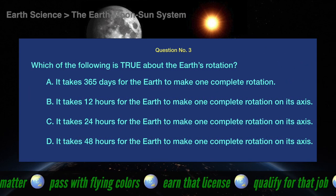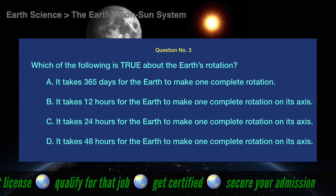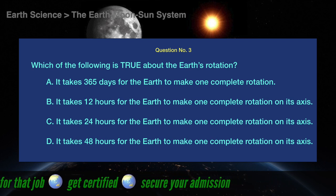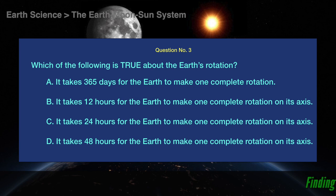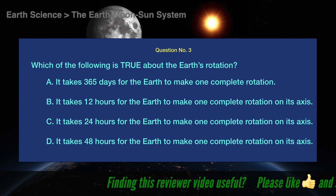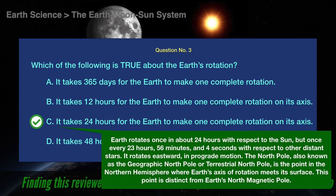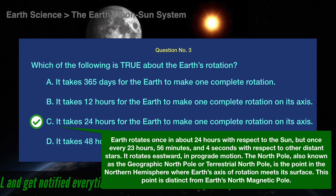Question number 3. Which of the following is true about the earth's rotation? A. It takes 365 days for the earth to make one complete rotation. B. It takes 12 hours for the earth to make one complete rotation on its axis. C. It takes 24 hours for the earth to make one complete rotation on its axis. D. It takes 48 hours for the earth to make one complete rotation on its axis. The correct answer is C. It takes 24 hours for the earth to make one complete rotation on its axis. Earth rotates once in about 24 hours with respect to the Sun, but once every 23 hours, 56 minutes, and 4 seconds with respect to other distant stars. It rotates eastward, in prograde motion.